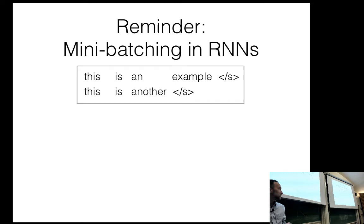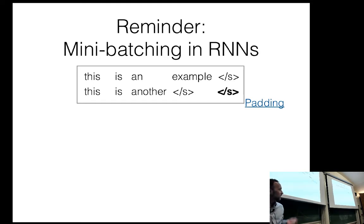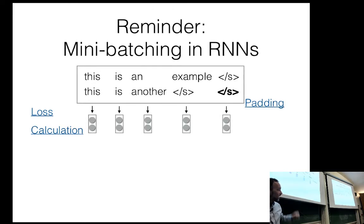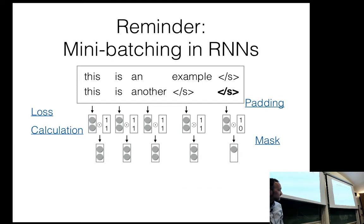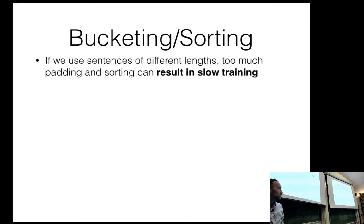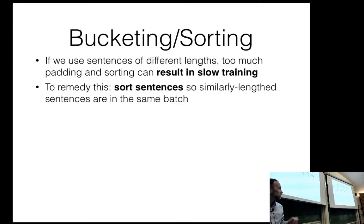When doing mini-batching in RNNs, we group together sentences of similar or different lengths. For loss calculation, we do masking and summing. It's very common to bucket or sort your sentences — if using sentences of different lengths, too much padding without sorting results in slow training. People sort sentences so similarly-lengthed sentences are in the same batch.